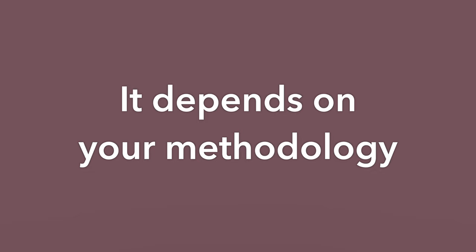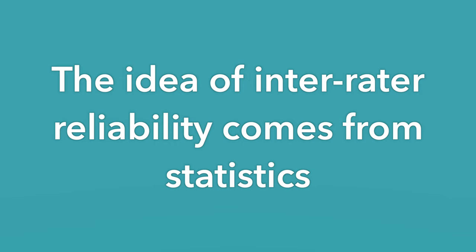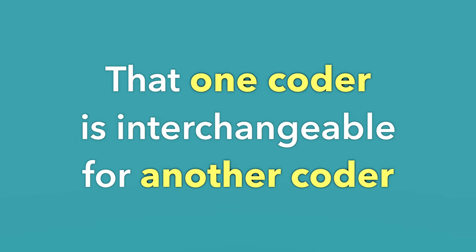It depends on your methodology. It depends on where you might want to publish. And I would argue that if you're working as a team, it's important for your teammates to understand how you're coding and to do it similarly. The idea of inter-rater reliability comes from statistics, and it's that one coder is interchangeable for another. That's never going to be 100% achieved, but the idea is that you're achieving agreement — you're coding similarly. So in order for your coding to be useful, you likely want to go through this process as a team: coding the same data and seeing where there are differences.